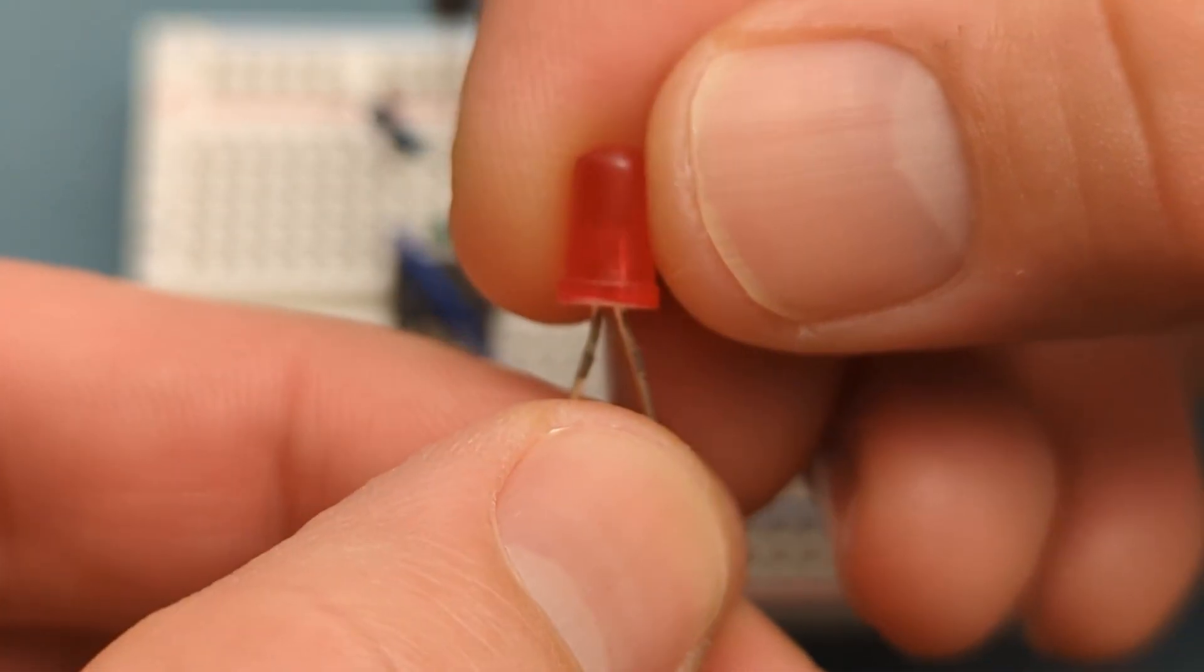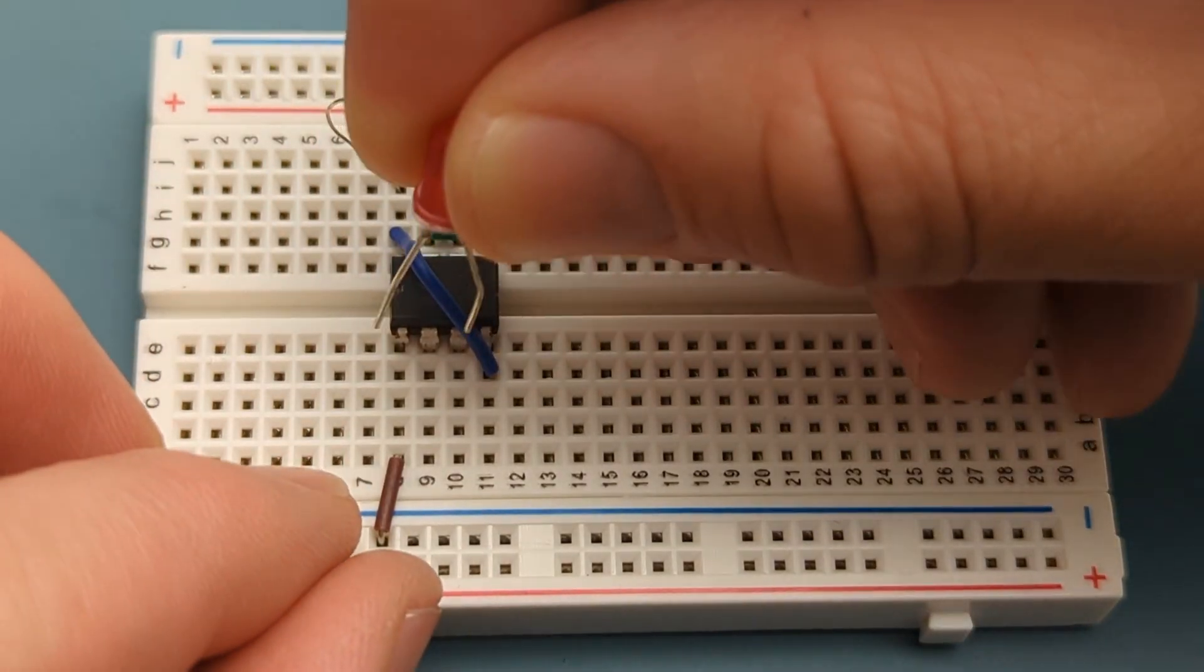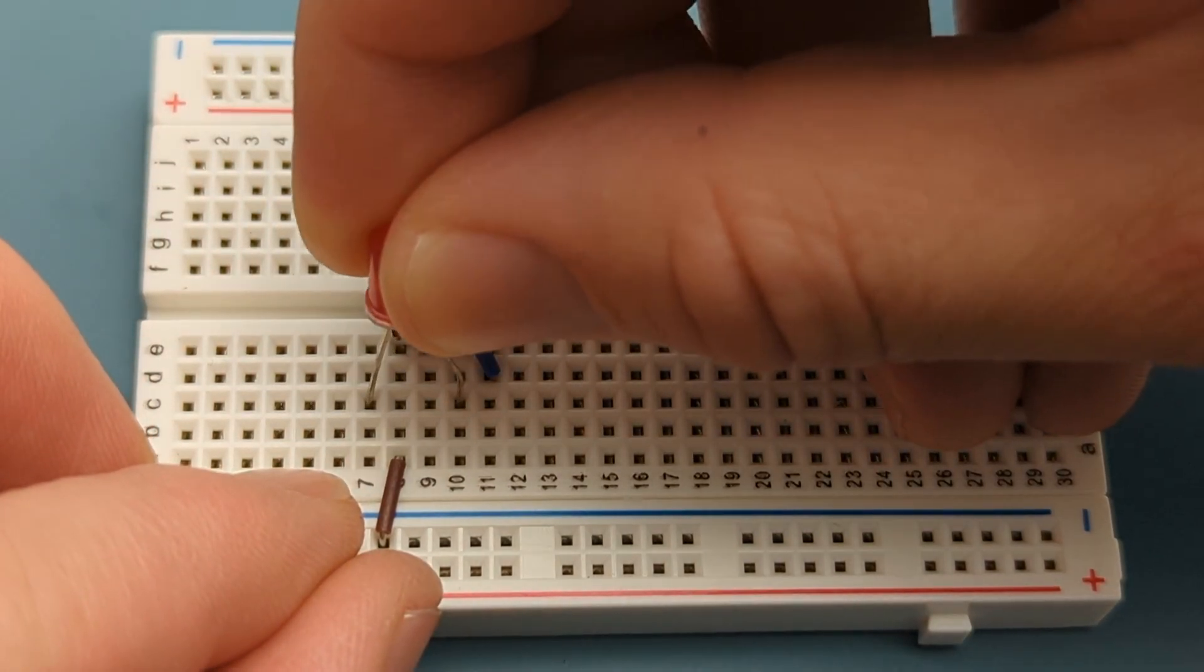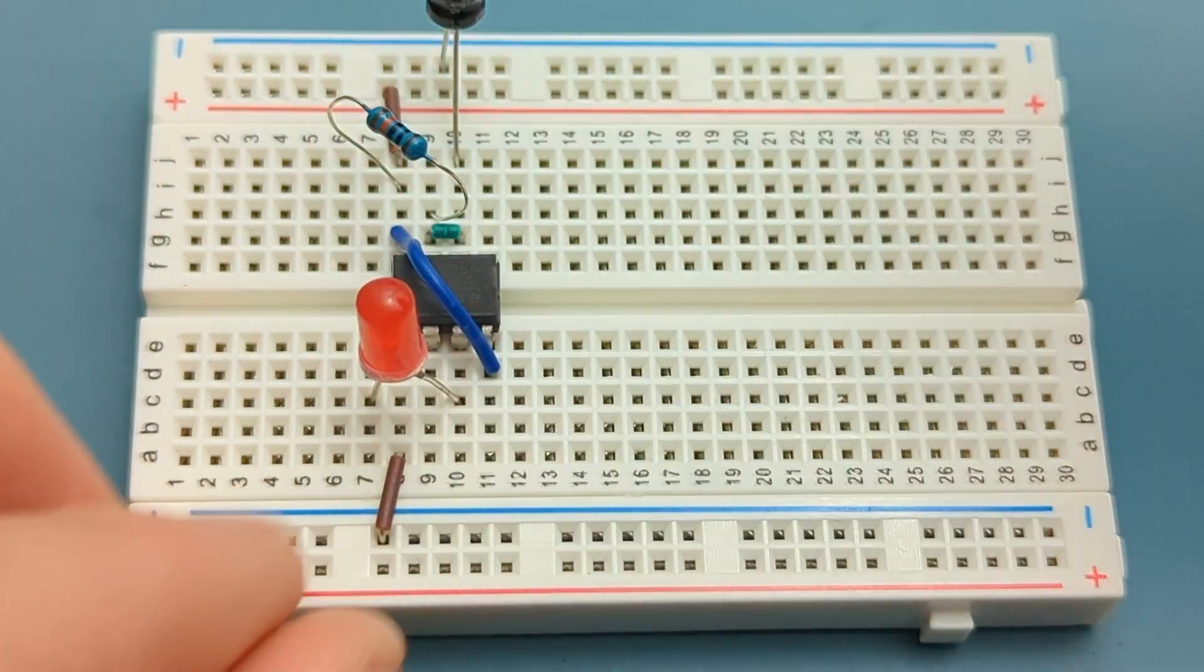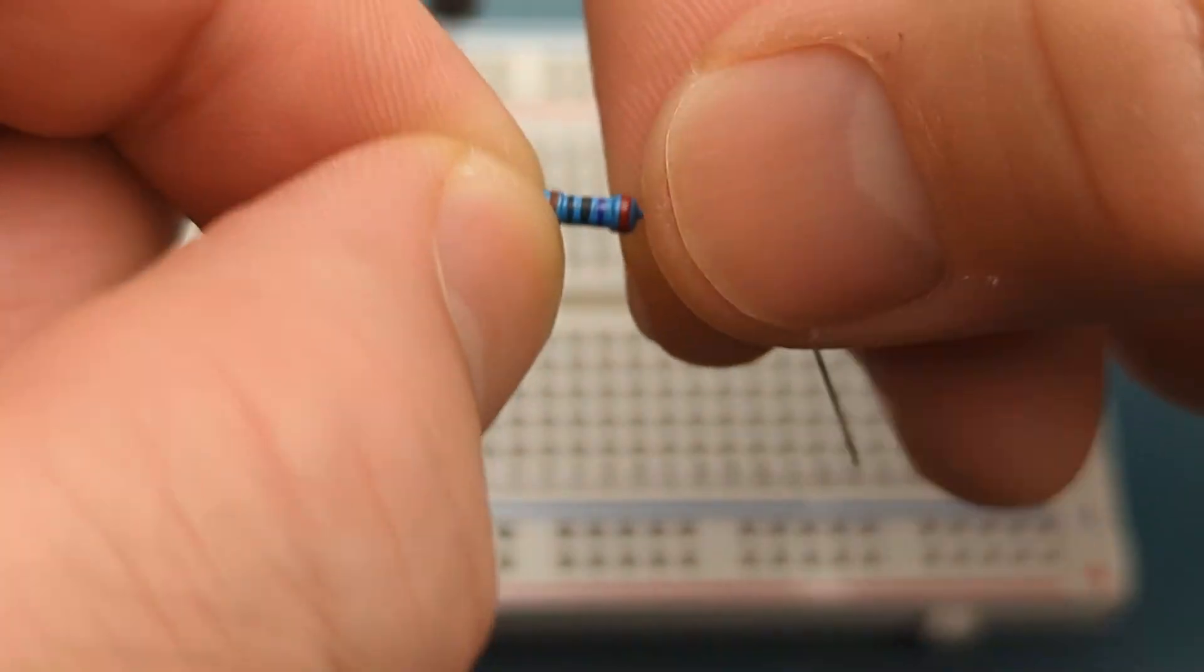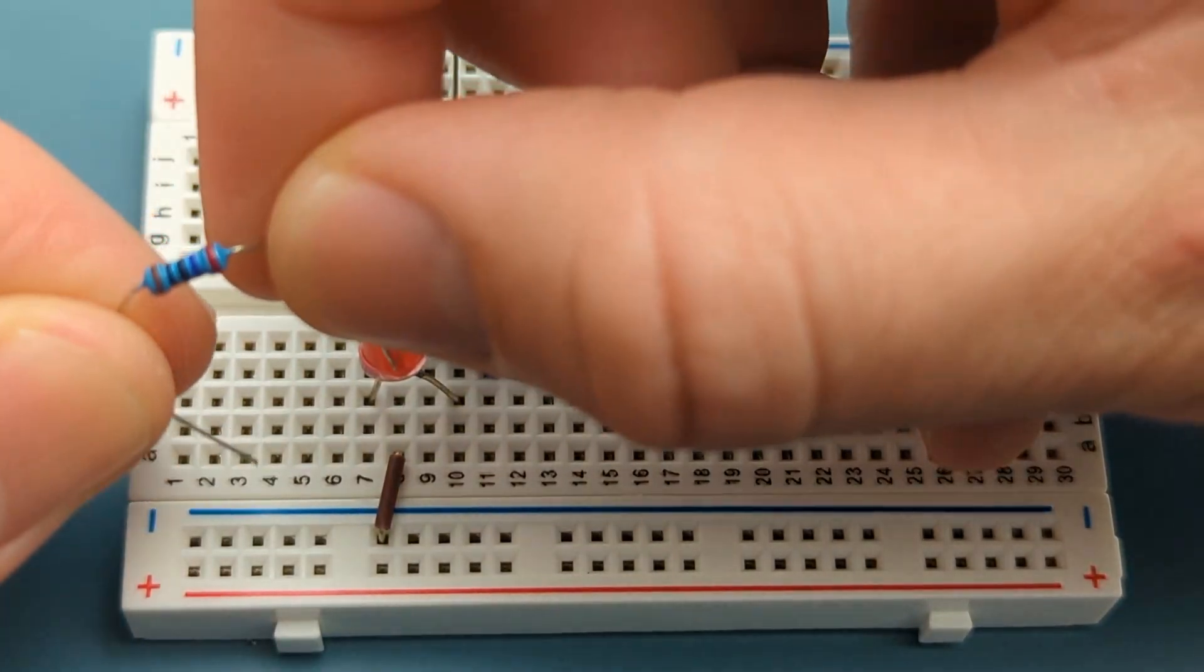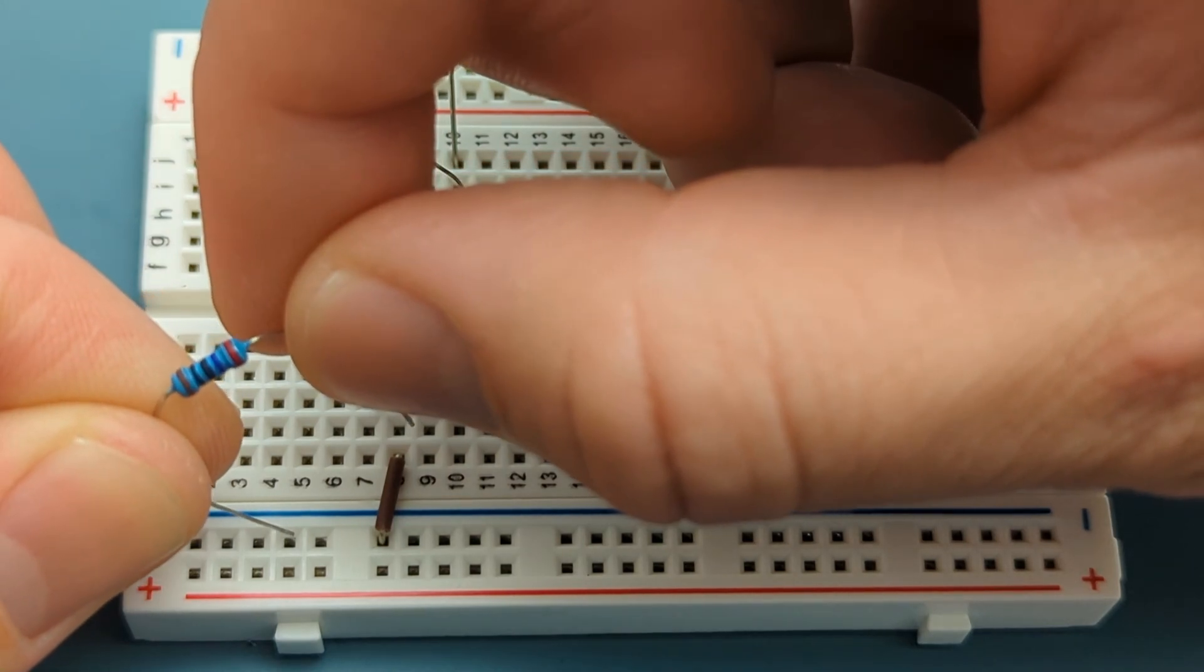Insert an LED into pin 3 or output in one row above the 555 timer. The positive lead is in pin 3. Bend the ends of a 270 ohm resistor. Insert the 270 ohm resistor into the same row as the LED and the negative rail.